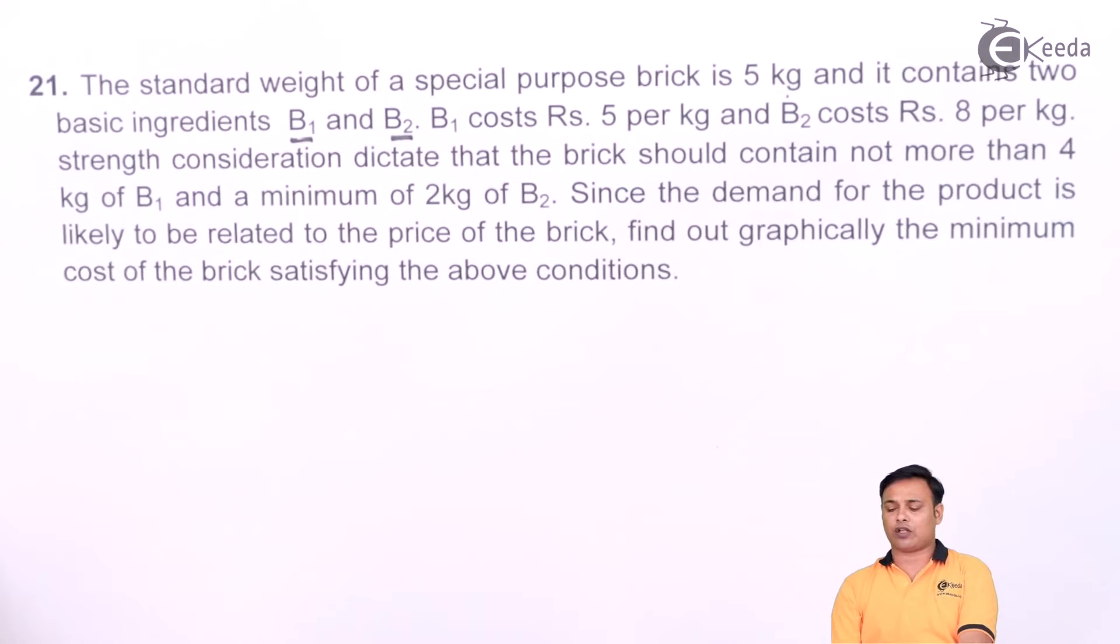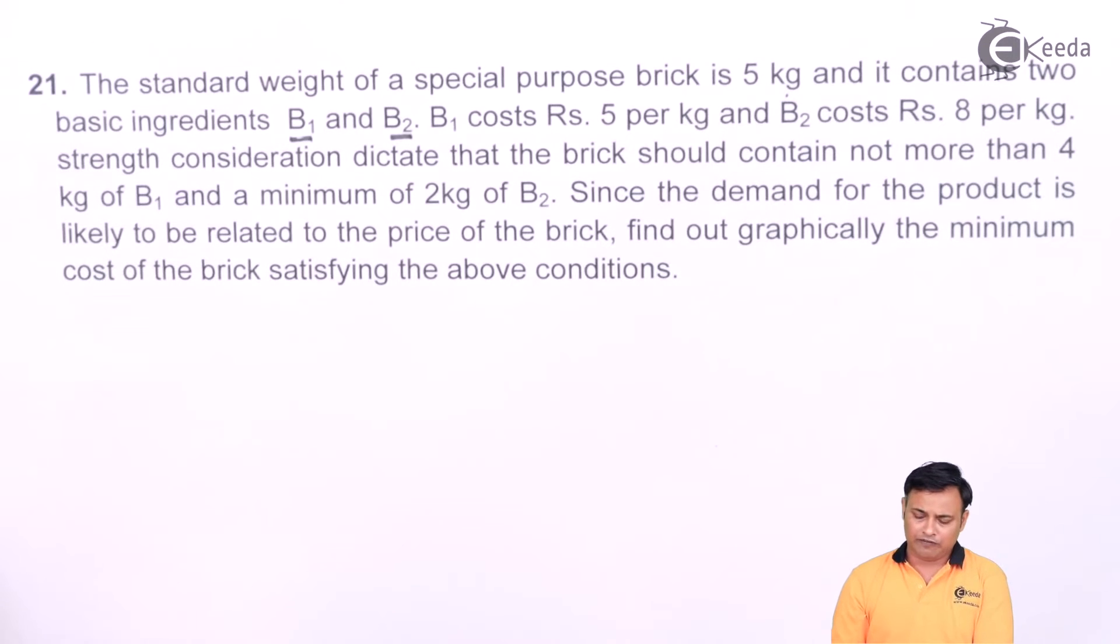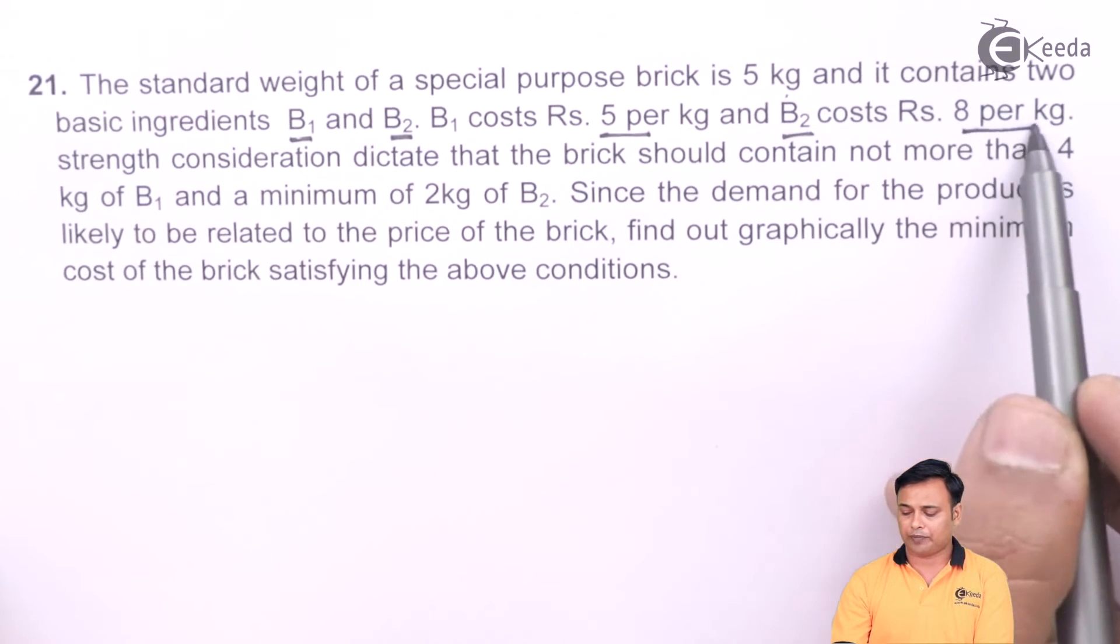B1 and B2 are the two different raw materials. B1 costs 5 rupees per kg whereas B2 costs 8 rupees per kg.